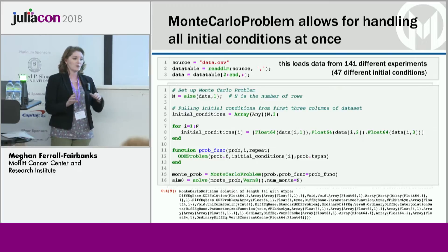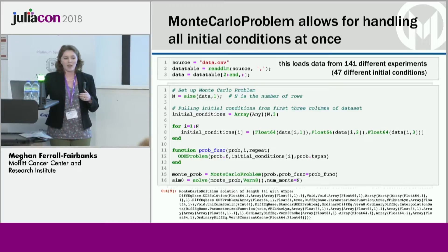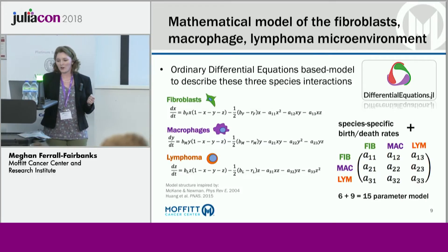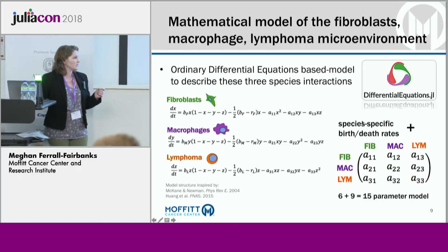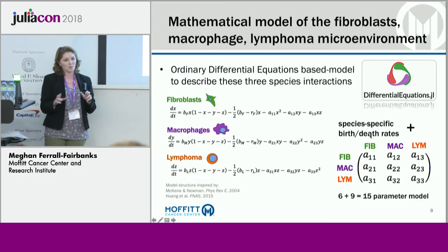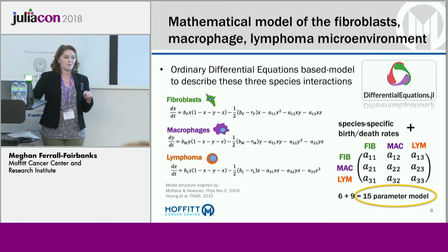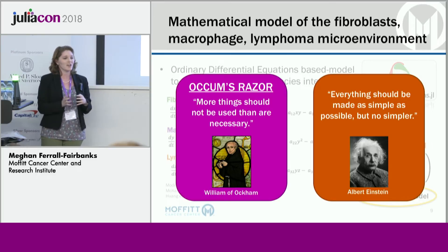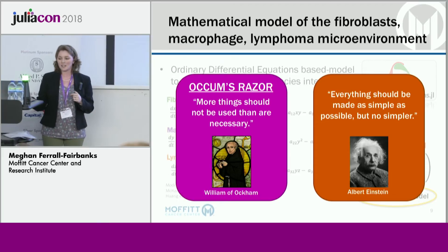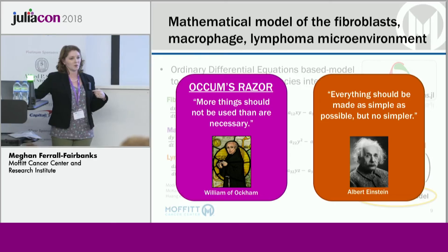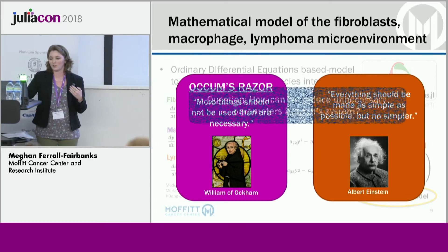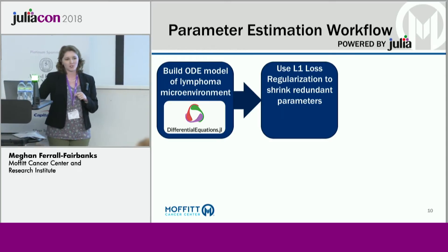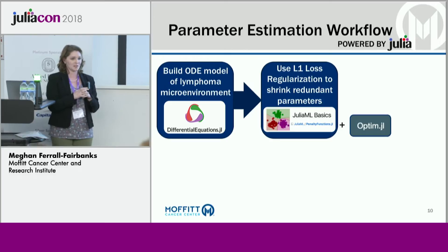What we care about are the different rates and which ones have actual biological meaning, so the next step is parameter estimation. My model has six birth-death rates and an interaction matrix of nine more parameters — 15 parameters total. But what we learn in mathematical modeling is that just because a parameter can exist doesn't mean it's actually true. So the question is: which parameters are unnecessary or not biologically meaningful? To identify these, I use L1 loss regularization, found in the machine learning package in combination with Optimization.jl.